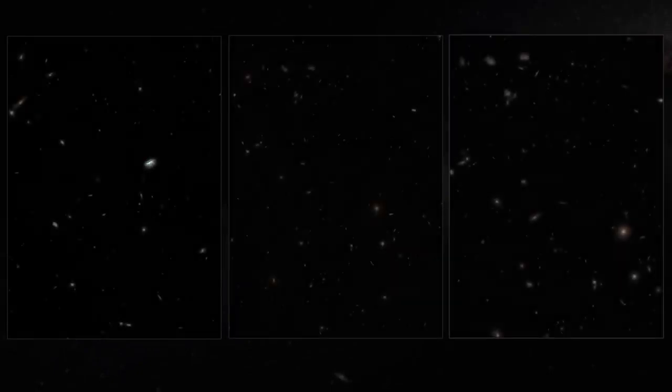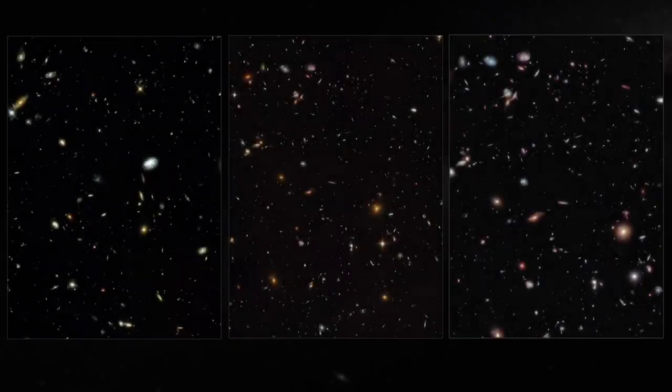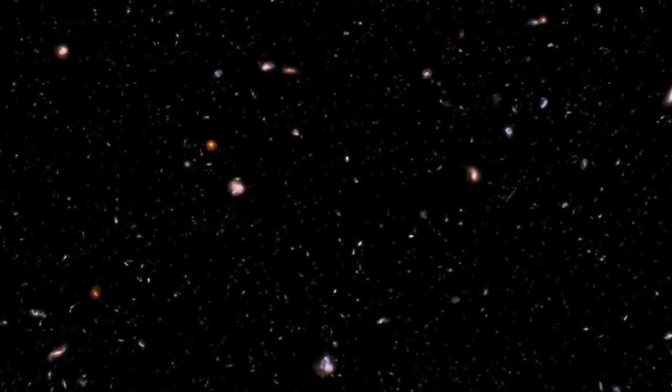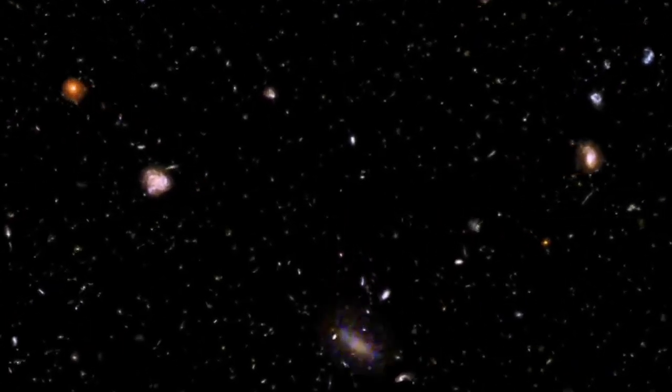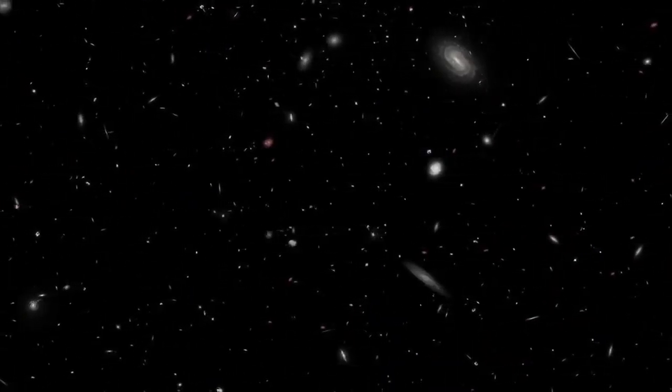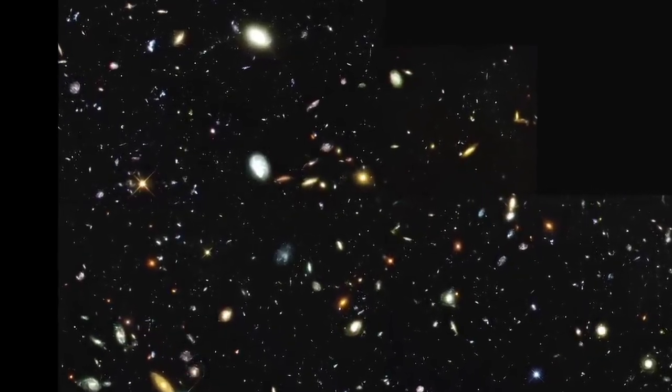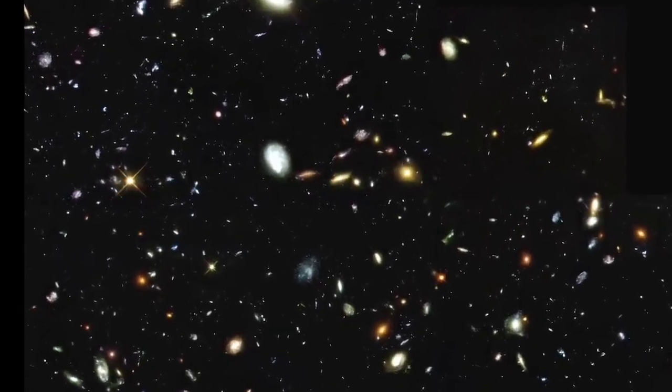A memorable result is the Hubble Deep Fields. These are extended observations of a particular region of the sky intended to reveal faint objects by collecting light from them for an appropriately long time. These images fascinated scientists and the general public alike, as the thousands of galaxies captured in single images spawned widespread fascination and amazement. The original and now famous Hubble Deep Field image was released in 1996, in which Hubble found almost 3,000 distant galaxies.